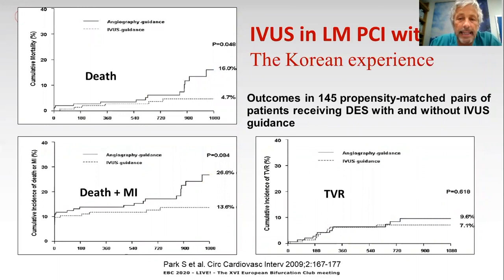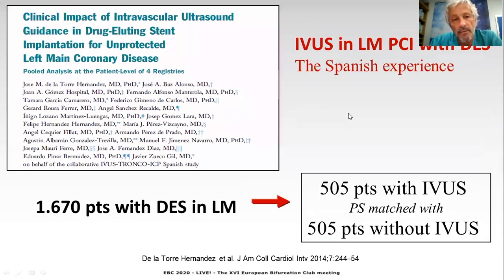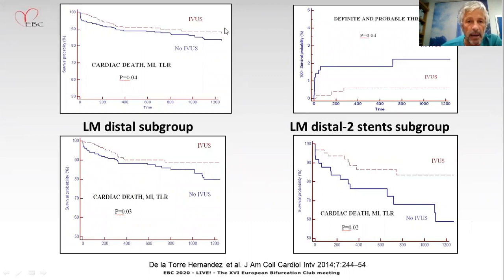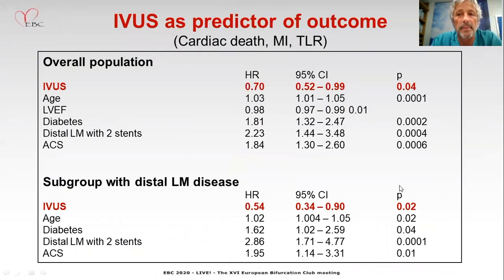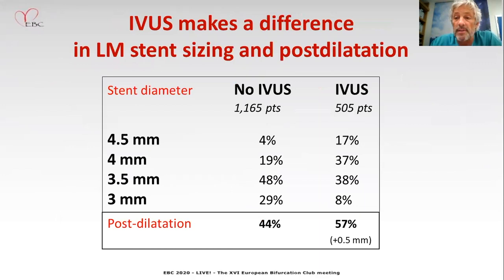The first study demonstrating potential benefit of IVUS guidance was a Korean paper with 145 propensity-matched pairs, showing a late benefit in mortality. From Spain, we pooled several registries in 2014 and collected 505 patients with IVUS matched with 505 patients without IVUS. Patients with IVUS guidance had better outcomes, with a very important difference in definite or probable thrombosis — a critical event in this location in the coronary tree. The distal subgroup gets even larger benefits from IVUS guidance, and the left main distal with two-stent subgroup was particularly benefited. IVUS was an independent predictor of outcome for the overall population and for left main distal disease.